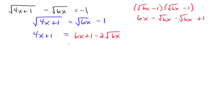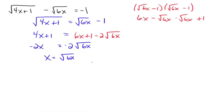Isolate the radical again. Subtract 6x from both sides — you get negative 2x. Subtract the 1 from both sides. You get negative 2 equals negative 2 square root of 6x. Divide by negative 2, and you get x equals the square root of 6x. Now square both sides again, and you get x squared equals 6x. Since all the radicals are gone, you now have a quadratic equation.